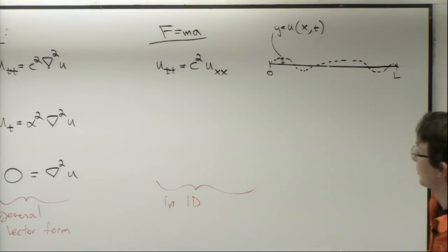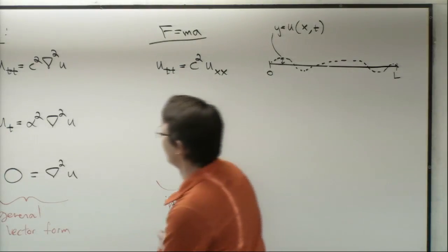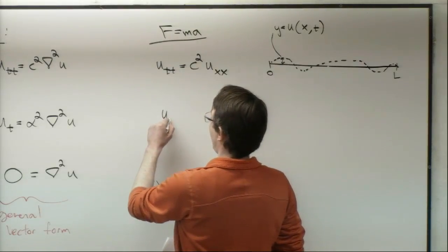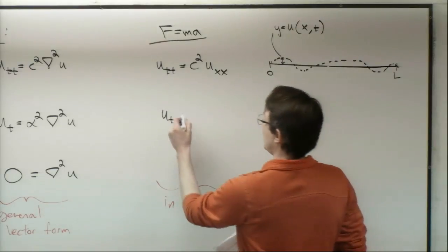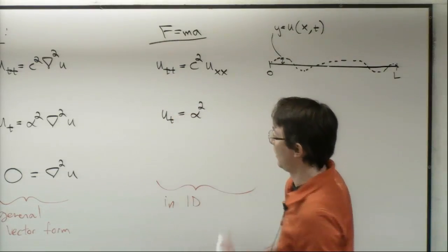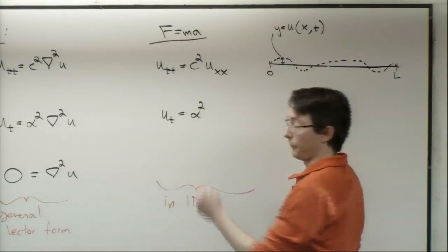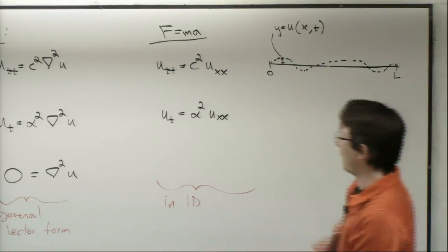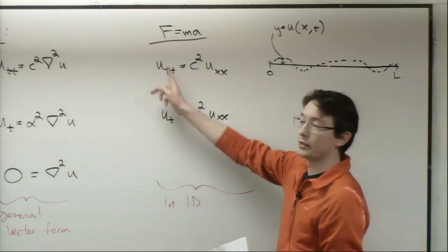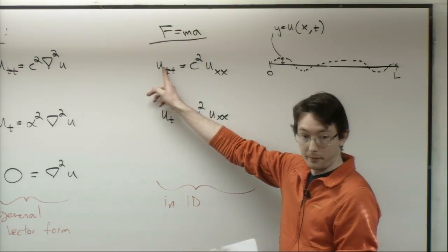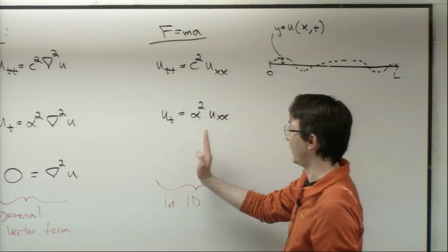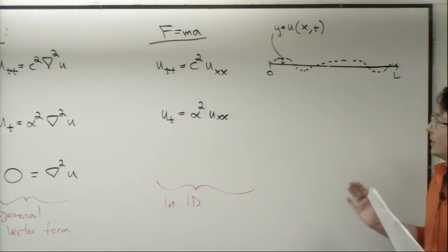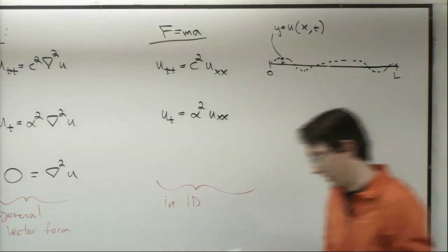For the heat equation in 1D: u_T = α·u_xx. These two equations look very similar — the only difference is that the wave equation has a second partial derivative in time, while the heat equation has a first. It seems like a small difference, but it's actually a huge difference — they are entirely different classes of PDEs with wildly different solutions. The wave equation is called a hyperbolic PDE, and the heat equation is called a parabolic PDE.